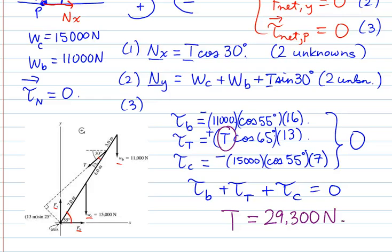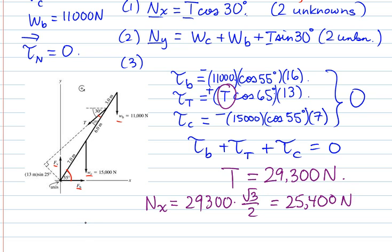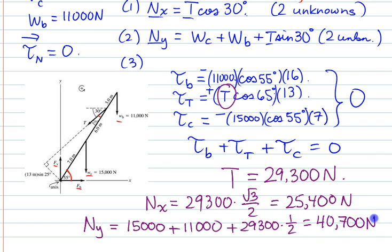That finds us the tension. Now we can go back and figure out everything else. We could find N_x—it's equal to tension times the cosine of 30, and that gets us about 25,400 newtons. We can also get N_y, so that's the weight of the crane plus the weight of the box plus the tension times the sine of 30, and that gets us 40,700 newtons. That's it—that's our tension and the horizontal and vertical components of the normal force.